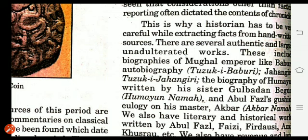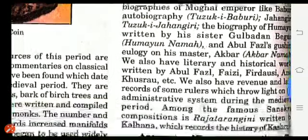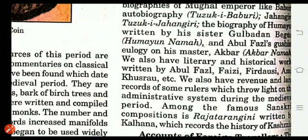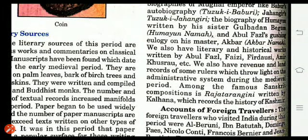Among these unadulterated works we have biographies of Mughal emperors, including Babur's autobiography Tuzak-e-Baburi, Jahangir's Tuzak-e-Jahangiri, the biography of Humayun written by his sister Gulbadan Begum called Humayun Nama, and Abul Fazl's chronicle of his master Akbar called Akbar Nama. We also have literary and historical works by Abul Fazl, Faizi, Firdausi, and Amir Khusro, as well as revenue and land records of some rulers which shed light on the administrative system of the medieval period.